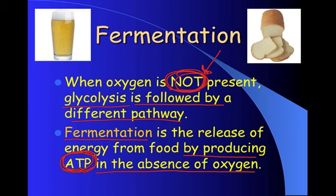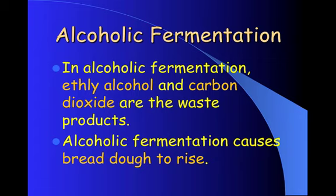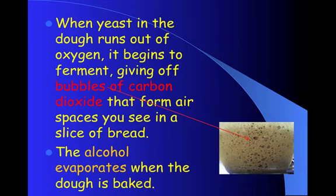There are two types of fermentation. The first is alcoholic fermentation, in which ethyl alcohol and carbon dioxide are the waste products. A common process you probably know is that alcoholic fermentation causes bread dough to rise — when yeast in the dough runs out of oxygen, it begins to ferment, giving off bubbles of carbon dioxide that form the air spaces you see in a slice of bread. The alcohol evaporates when the dough is baked due to the high temperature.